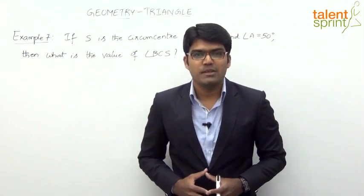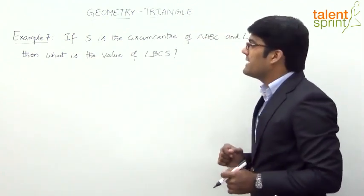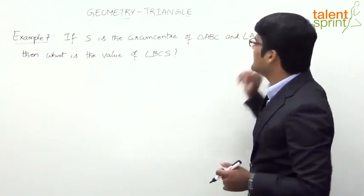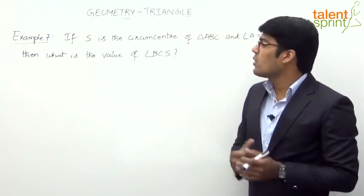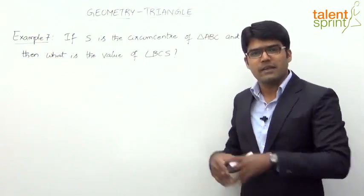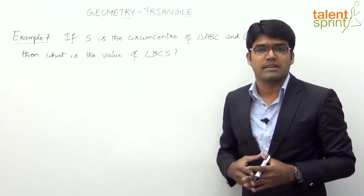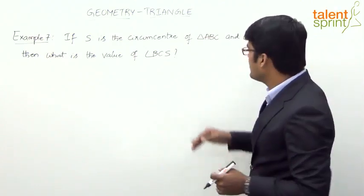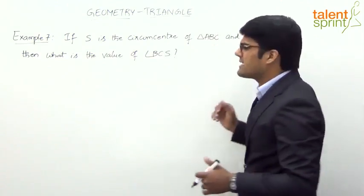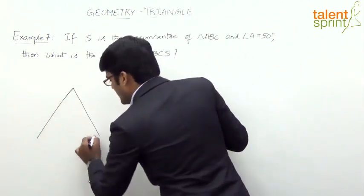Let us now solve a question based on circumcenter. The question says: if S is the circumcenter of a triangle ABC and angle A is 50 degrees, then what is the value of angle BCS? A very simple question — triangle ABC with S as circumcenter, angle A is 50 degrees, and we need to find the measure of angle BCS.